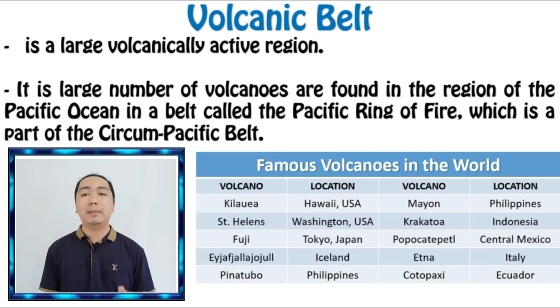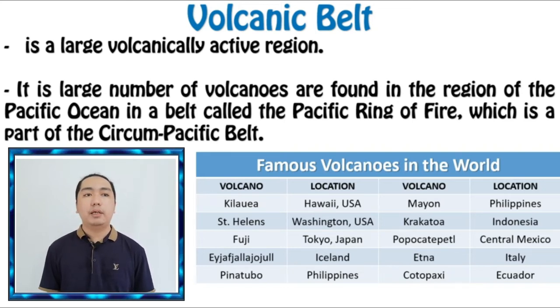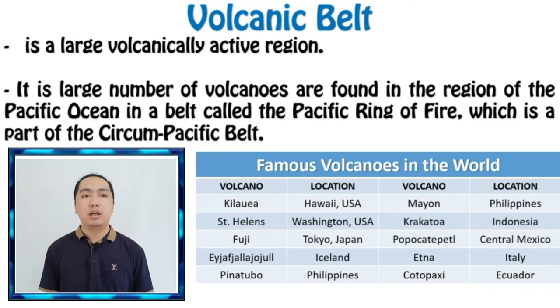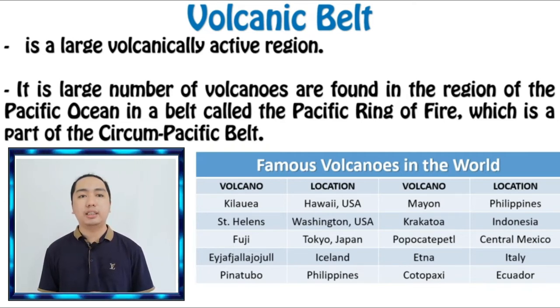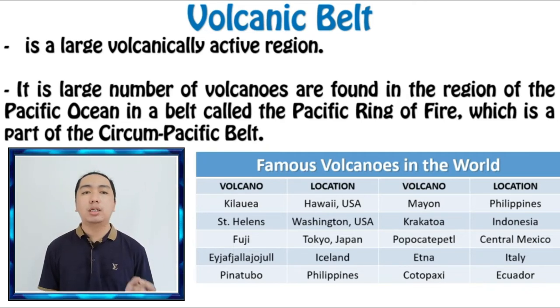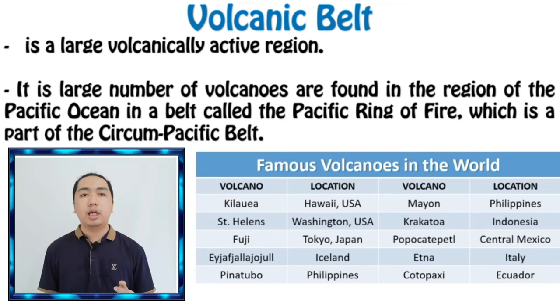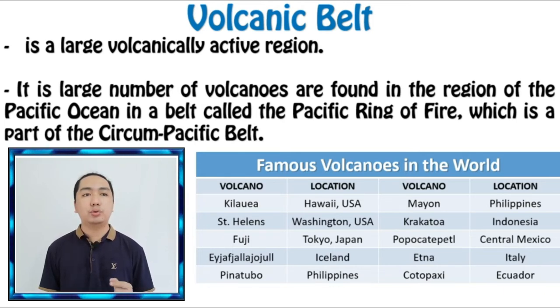Volcanoes are also found in convergent plate boundaries such as the Mid-Continental Belt. This belt includes the volcanoes of the Alps, the Mediterranean Sea like Stromboli, Vesuvius, and Etna, volcanoes of the Aegean Sea, Mount Ararat in Turkey, Elbourz, and Hindukush.